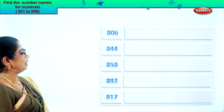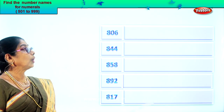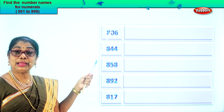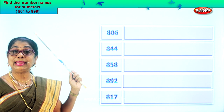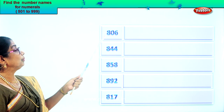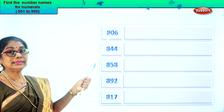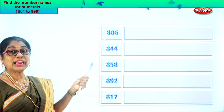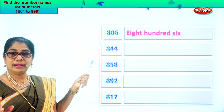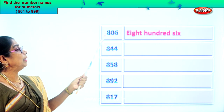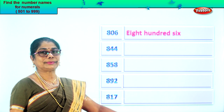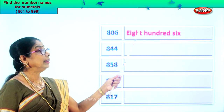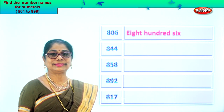Look what you have here. We have eight, zero, six. Six in the ones place, zero in the tens and eight in the hundreds place. Let's read the numeral: eight hundred six. So we write first eight hundred, then we add on six. Eight hundred six. Good.